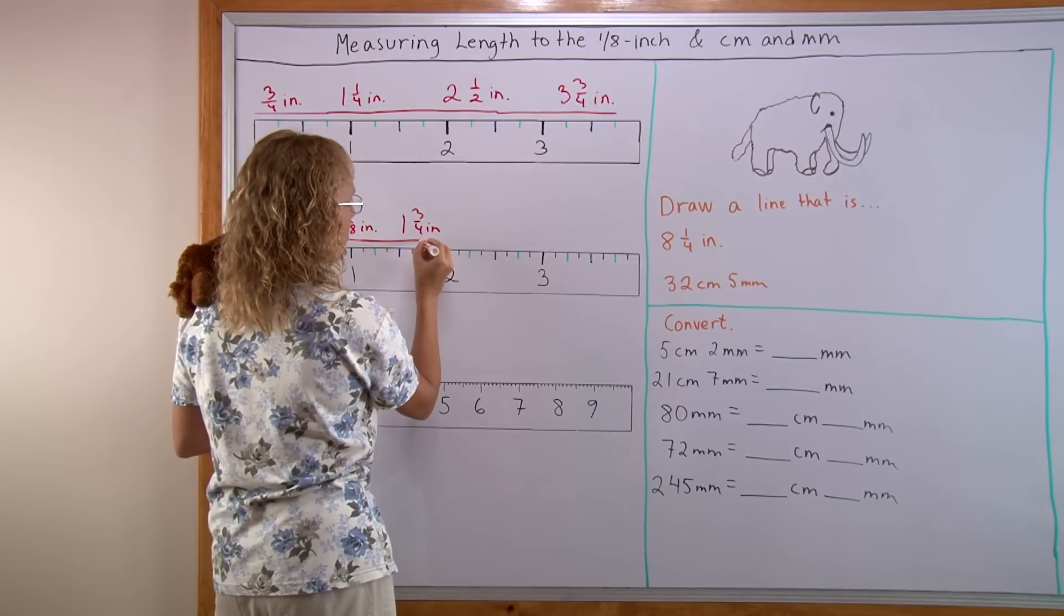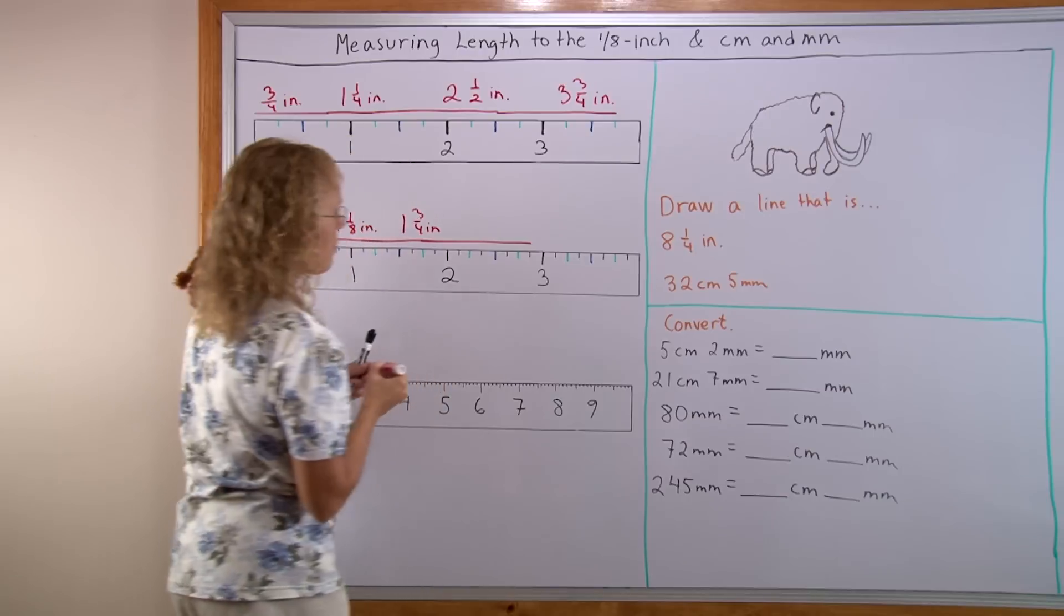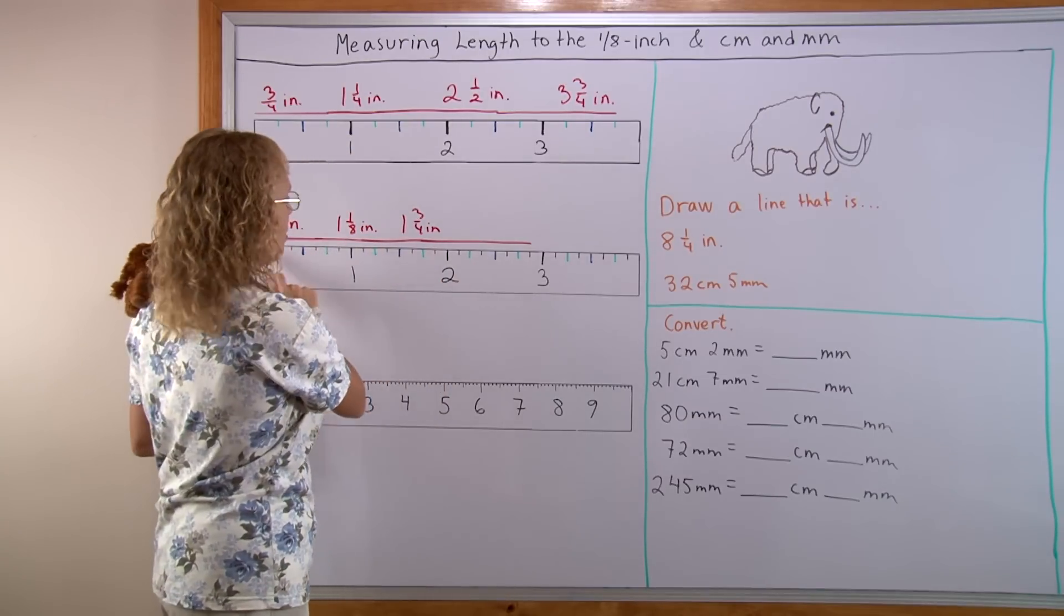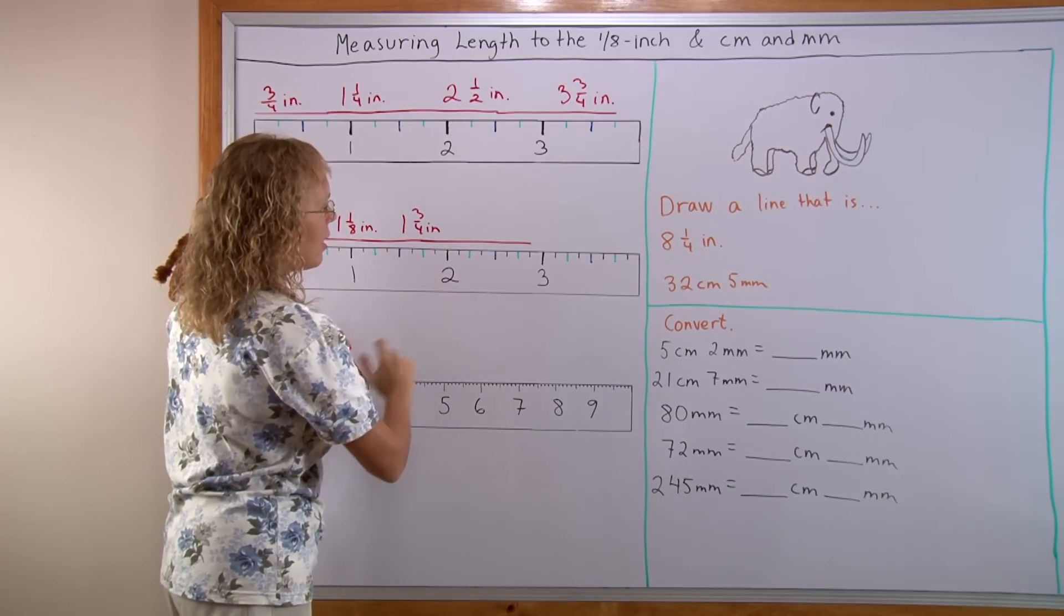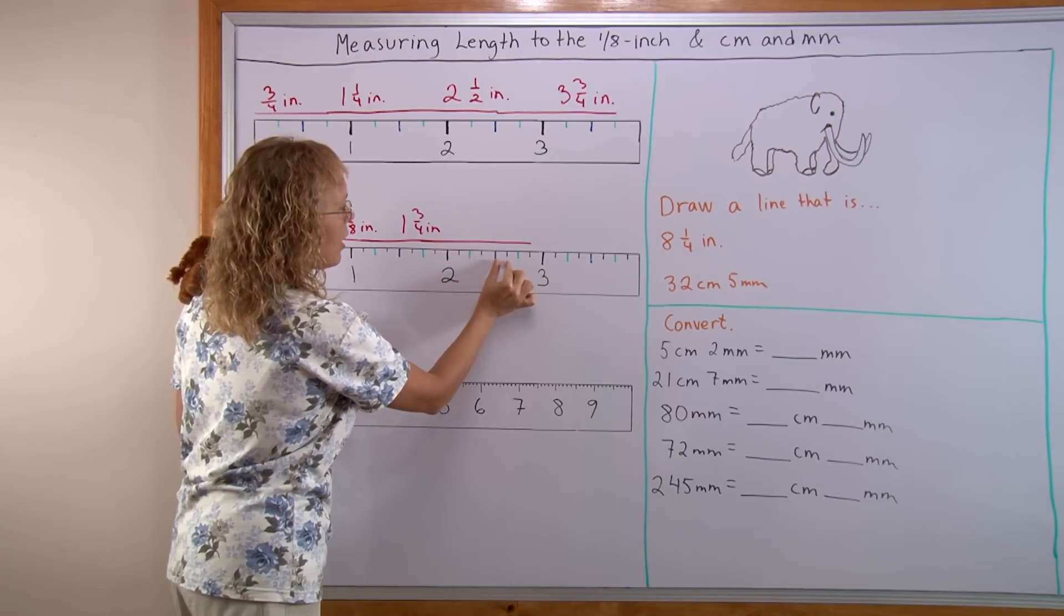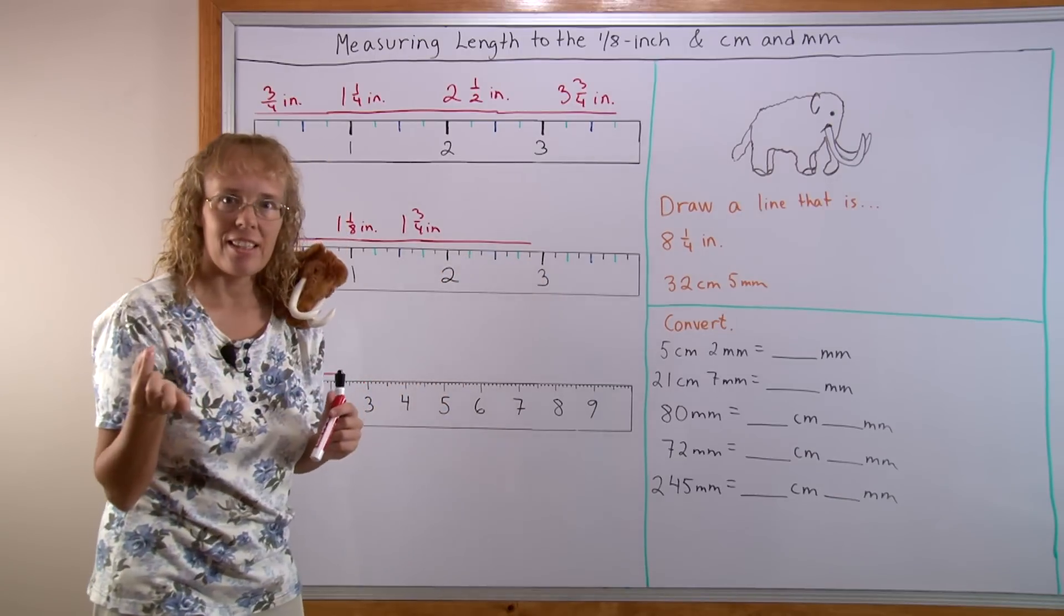And how about one more? Over there. Now we go past the 2 inch mark. So there's 2 inches here and then you can count 1, 2, 3, 4, 5, 6, 7. 7/8 of an inch.